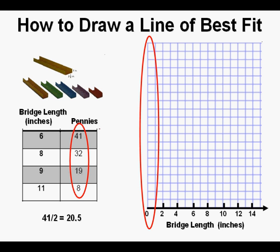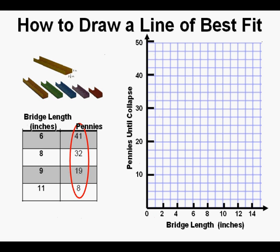So instead, we'll let four squares represent 10 pennies to be sure we can get all the data plotted within our available graphing area.